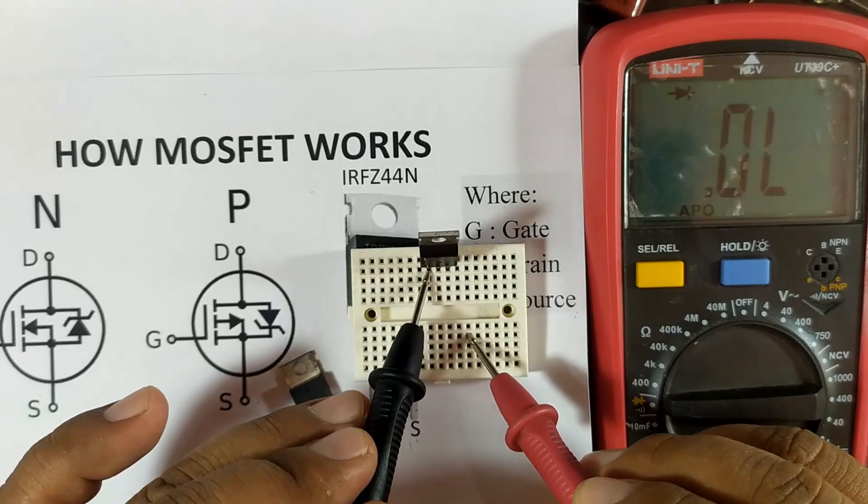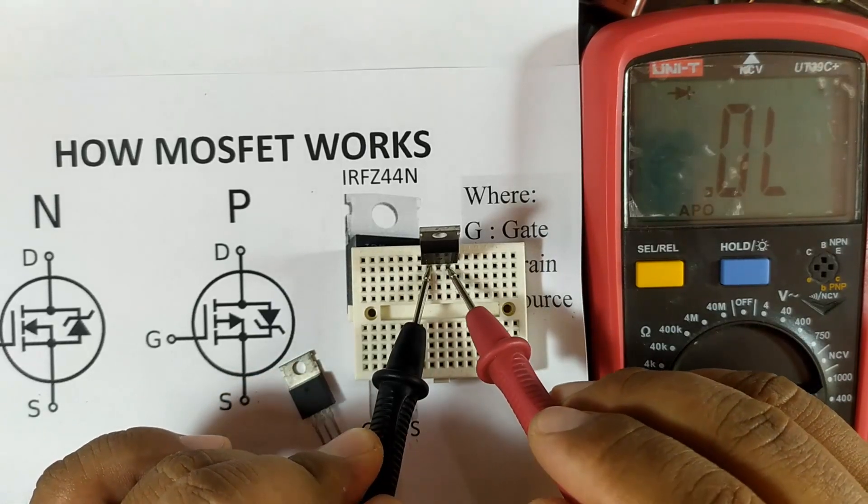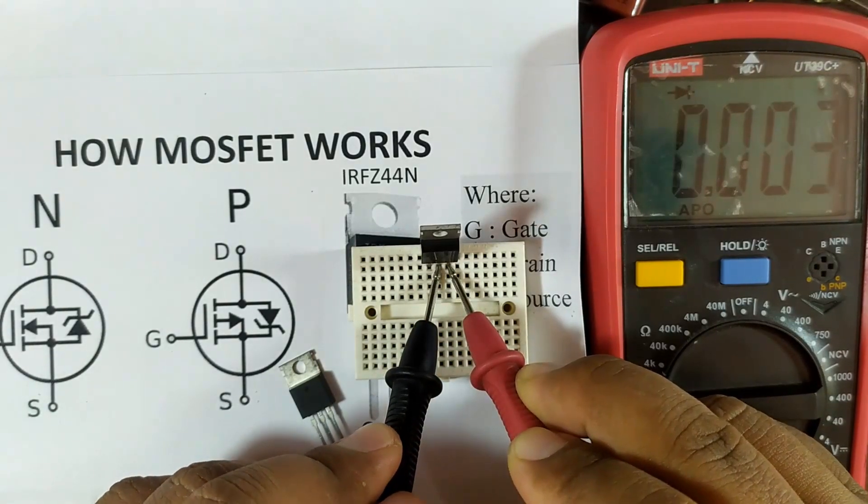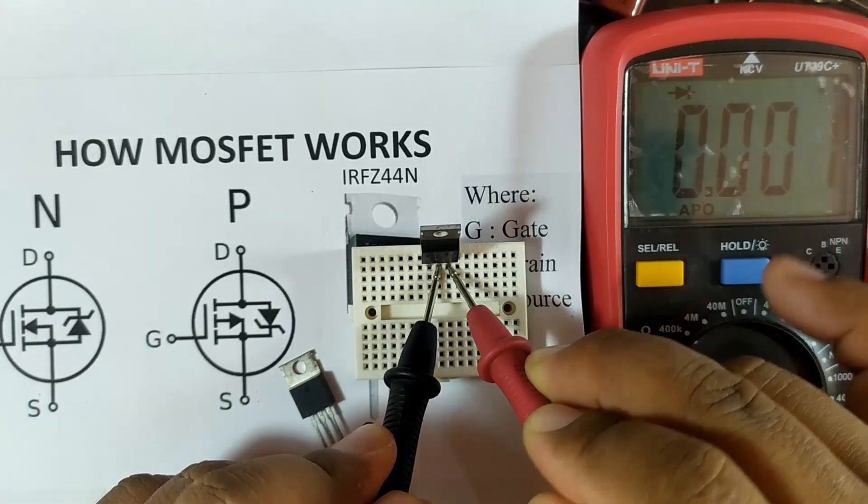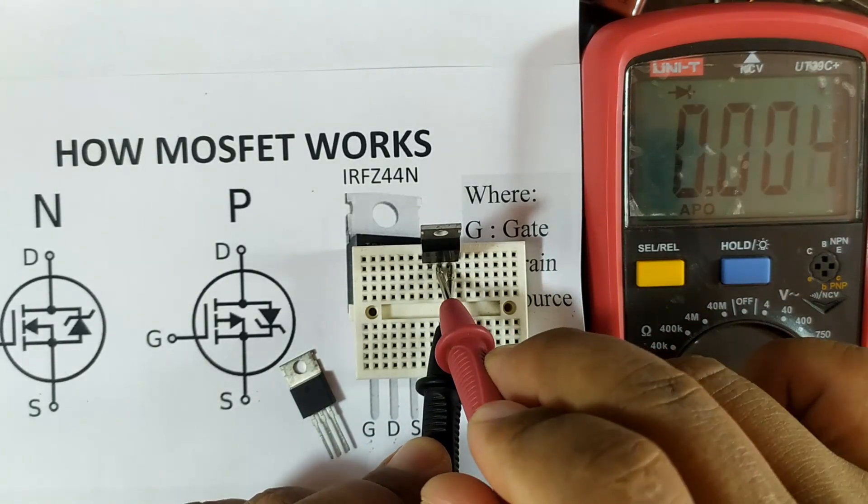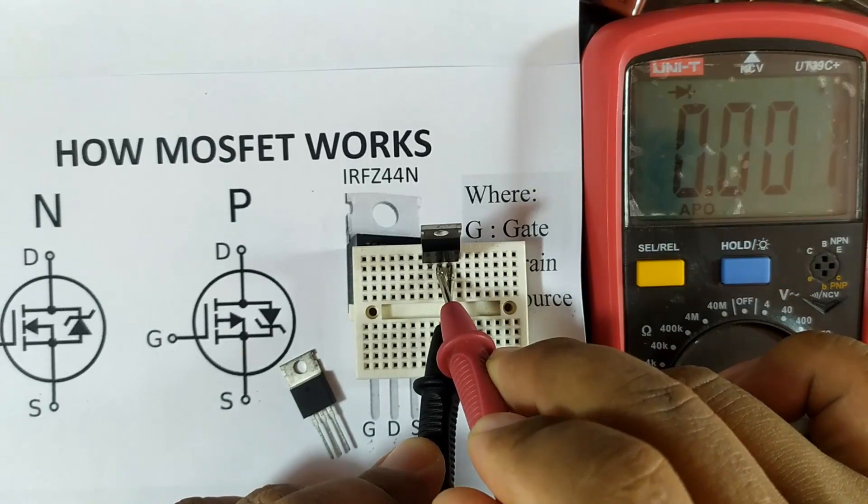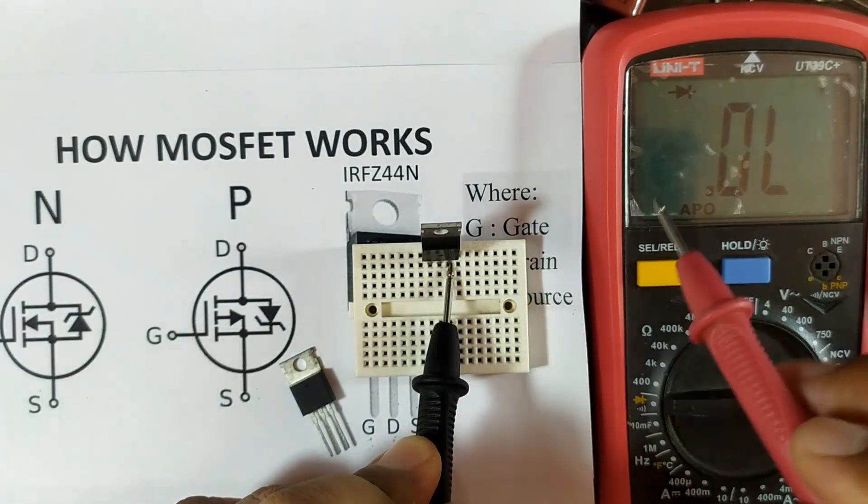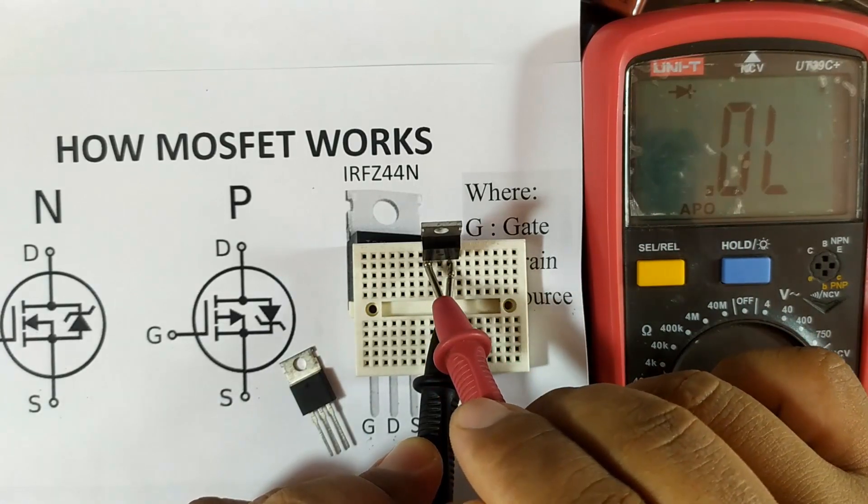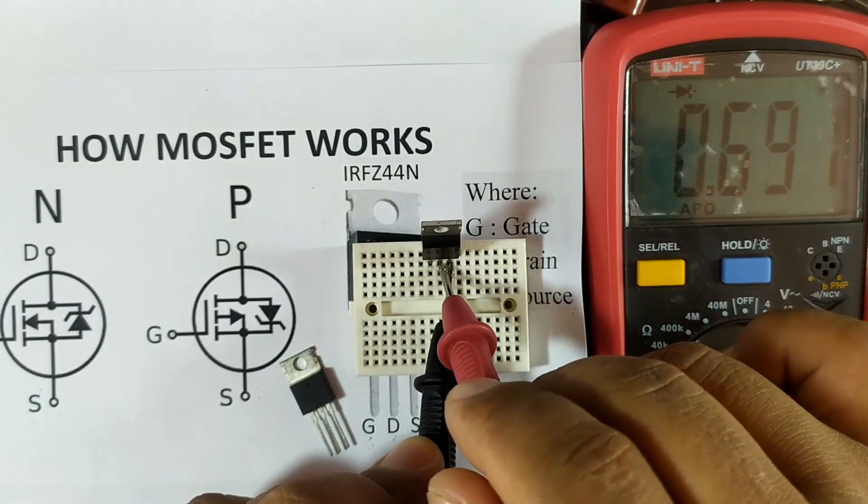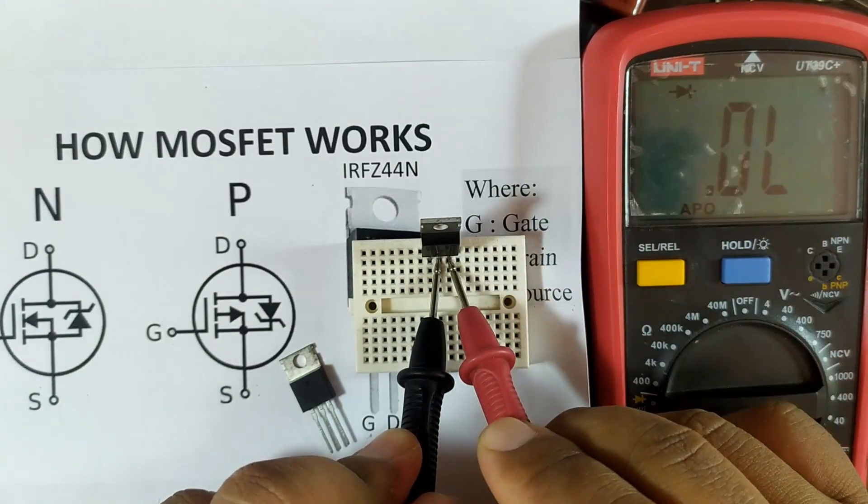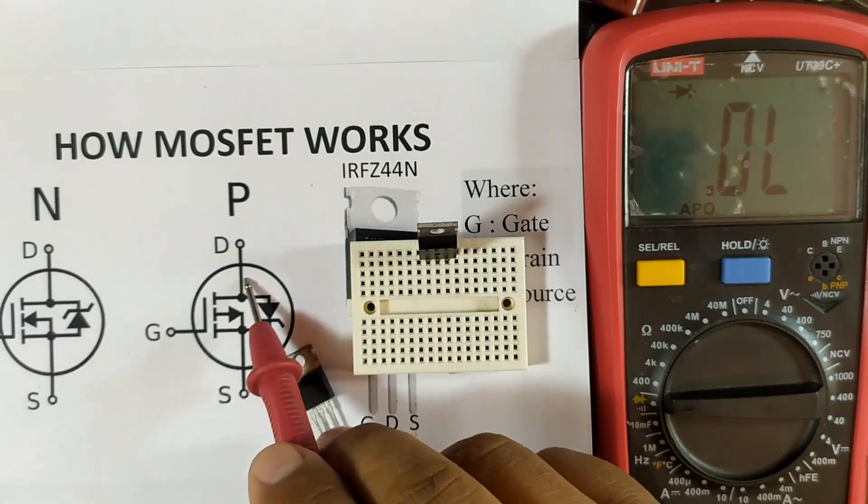Let's see. Negative at the gate, positive at the source. Negative I move it. There we have 0 ohms. And vice versa, 0 ohms. Now to delete the channel, we have positive, and then we measure. Diode. And it gives us high resistance. This transistor is P-channel.